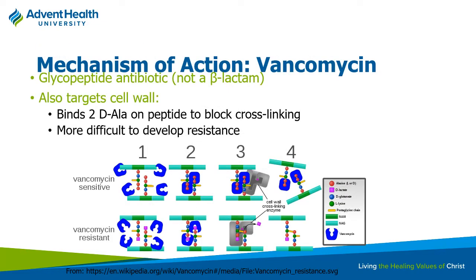Vancomycin is a very common antibiotic used in the hospital — a go-to for patients admitted to the floor. It's not a beta-lactam, but it still works on the cell wall. While beta-lactams bound to penicillin-binding protein, vancomycin binds directly to the D-alanine residues and prevents cross-linking from occurring.